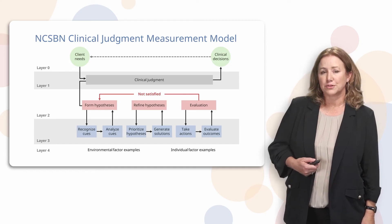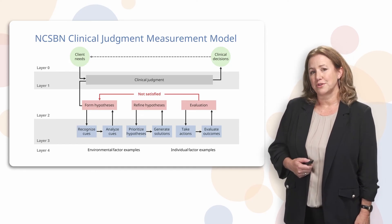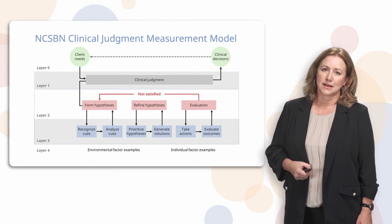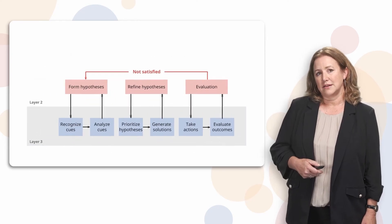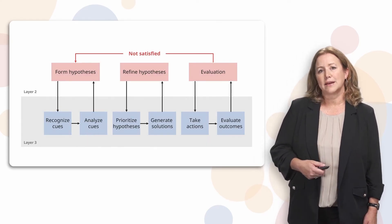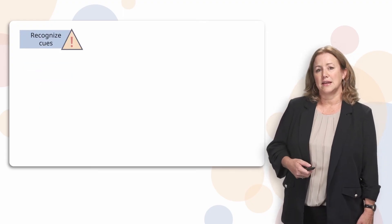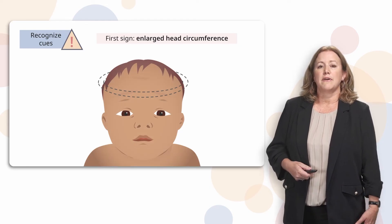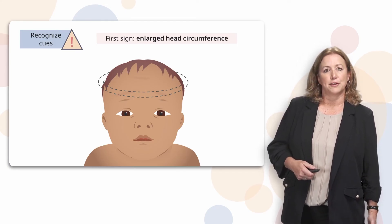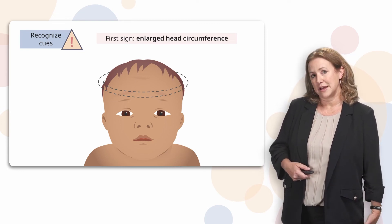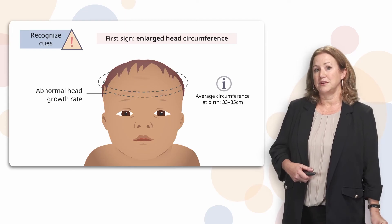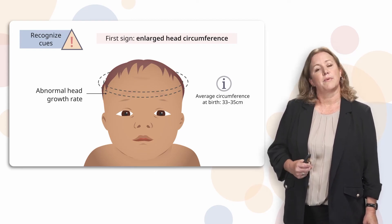This is the NCSBN Clinical Judgment Measurement Model — a framework being used in many next-generation NCLEX exam questions and case studies. You may hear about it in nursing school and see test questions framed using it. We're going to relate some of the content from this lecture to this model, especially the first two steps: recognizing cues and analyzing cues. In order to recognize and analyze cues of potential hydrocephalus in an infant, you must first be aware of how to recognize an abnormally shaped or abnormally growing head. You may need to know their baseline or birth head circumference and compare it to any measurement you take. A quick review: you take a tape measure over the eyebrows around the widest part of the head. At birth, the average full-term head circumference is about 33 to 35 centimeters.